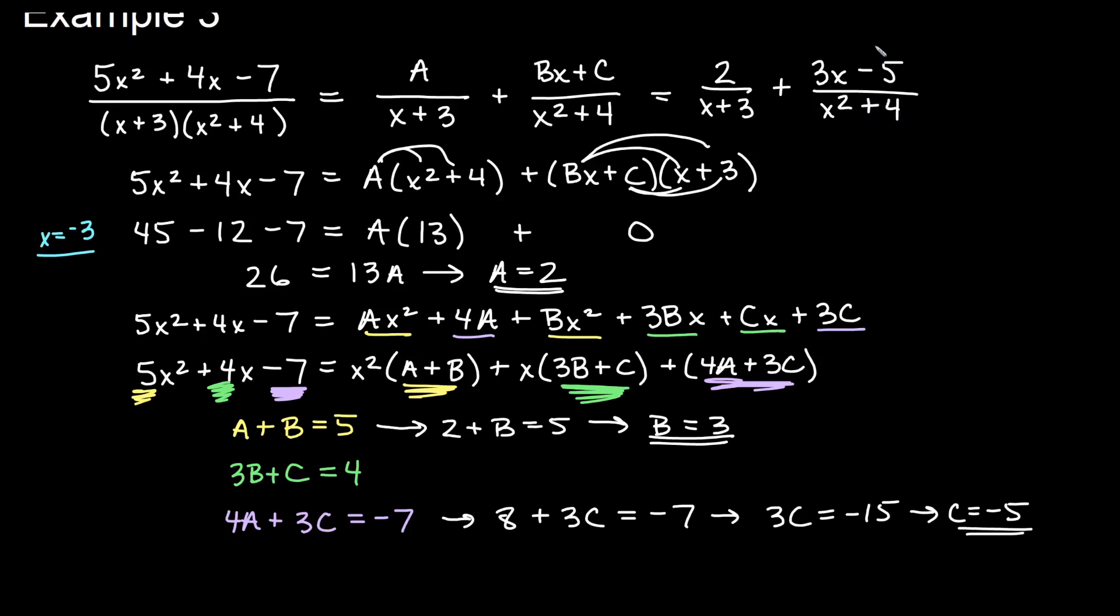Okay, so that's an example where you have to compare coefficients because we have an irreducible quadratic where I can't set that factor equal to 0 and we had to compare things on both sides. All right, we have two more examples left. Check out our example 4 and 5 videos. We hope to see you in the next one.